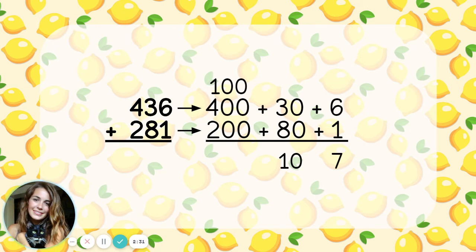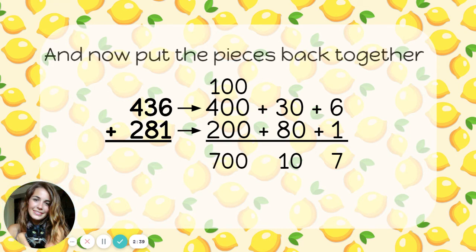Now let's add the hundreds. 100 plus 400 plus 200 is 700. And once again, I just put the pieces back together. This is my answer in expanded form. In standard form, that's the number 717.